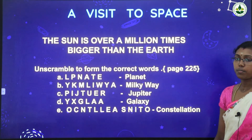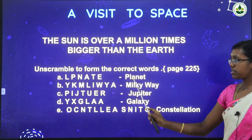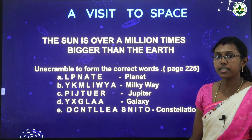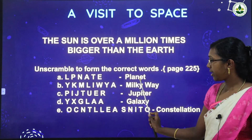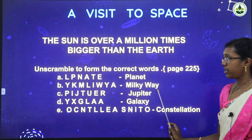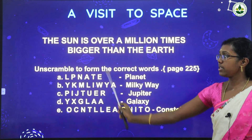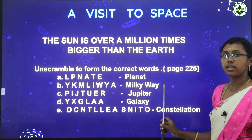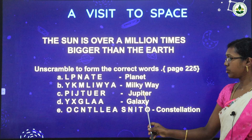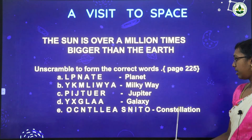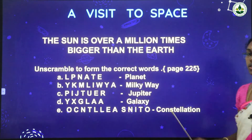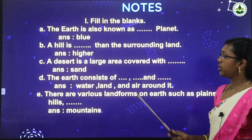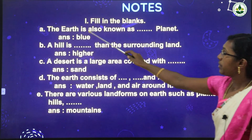In your textbook, a few unscrambled letters are given — you have to find the correct word. The answers are: planet, Milky Way, Jupiter, galaxy, and constellation. The spellings are given in the wrong order and you have to rearrange them. You can complete this on page number 225.